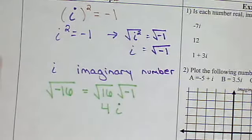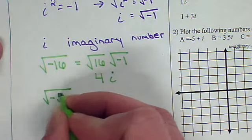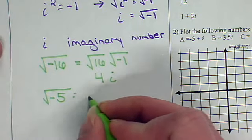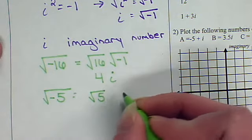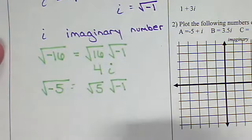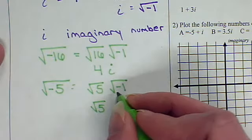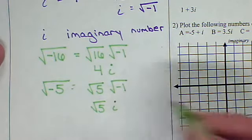I could even have the square root of negative 5. Rewrite it as the square root of 5 and the square root of negative 1 because 5 times negative 1 is negative 5. I don't know what the square root of 5 is, but I'll just write it. The square root of negative 1 is i.